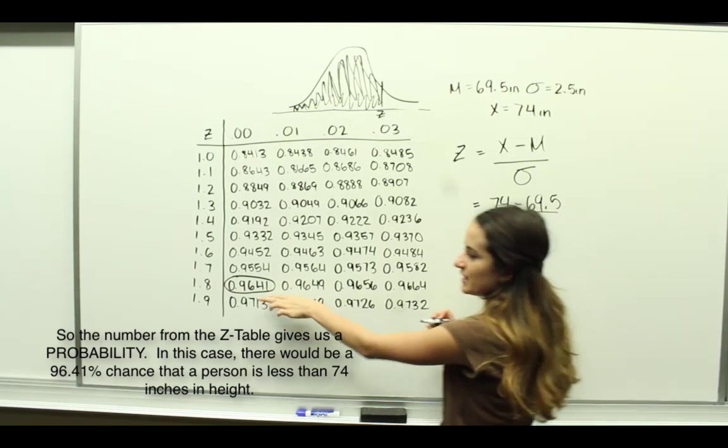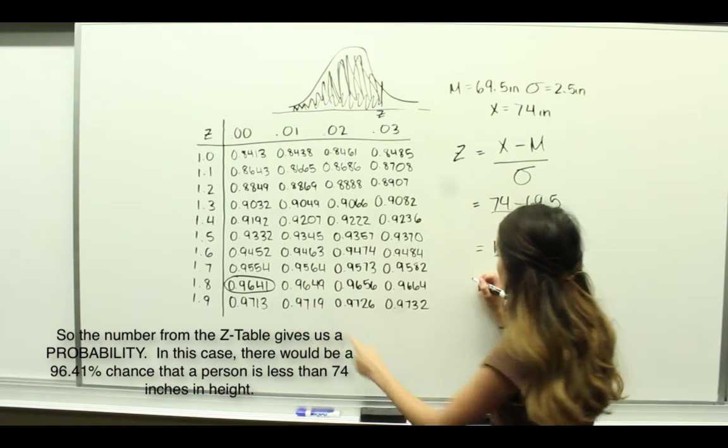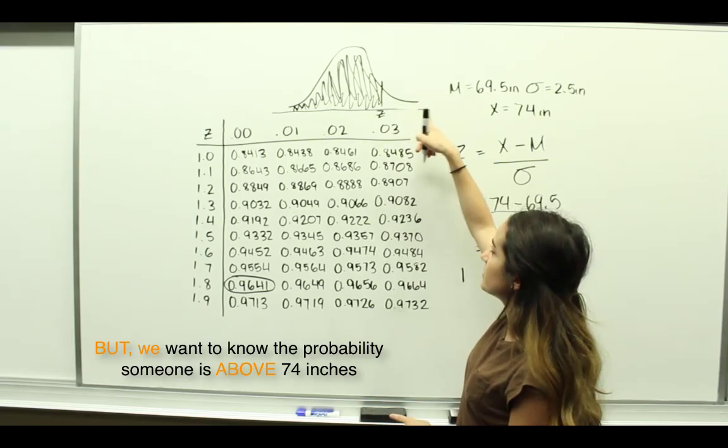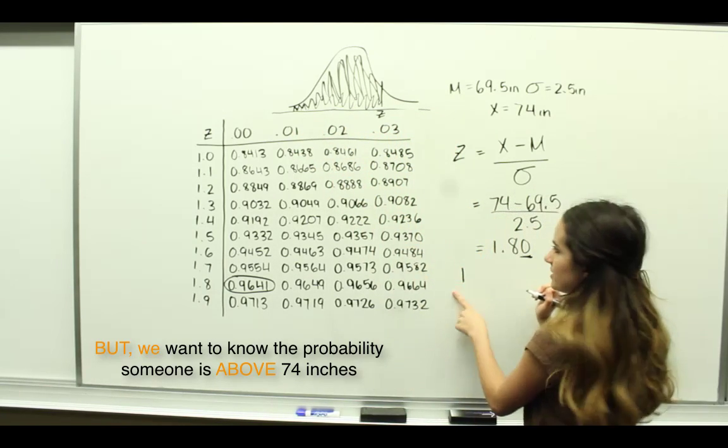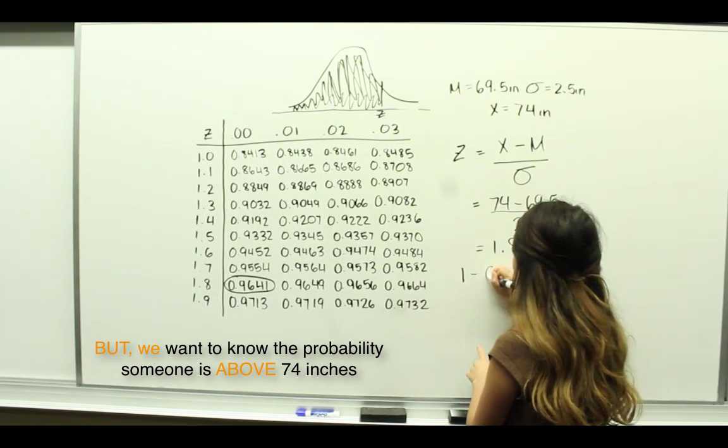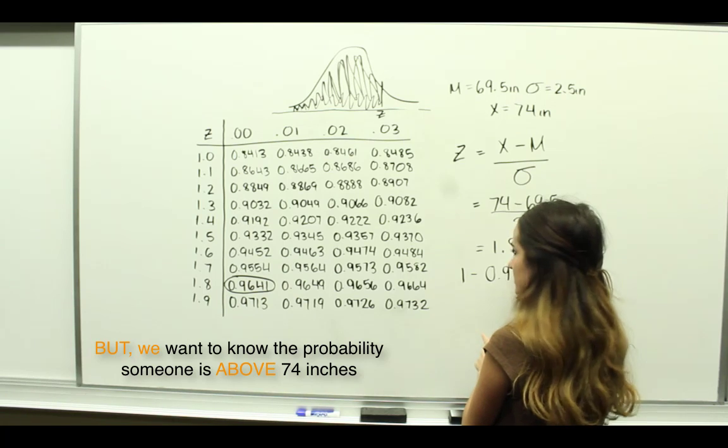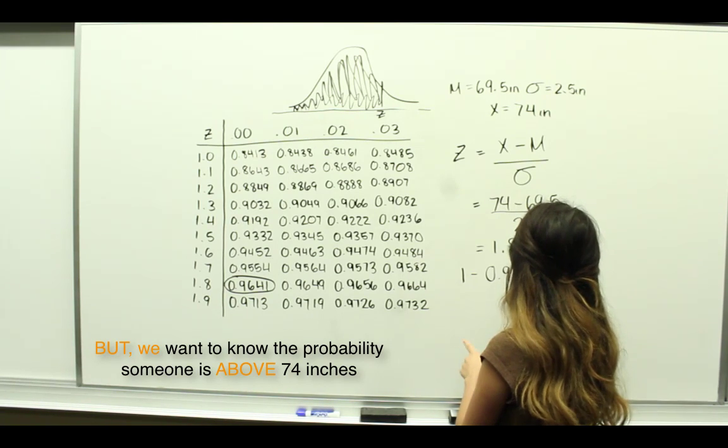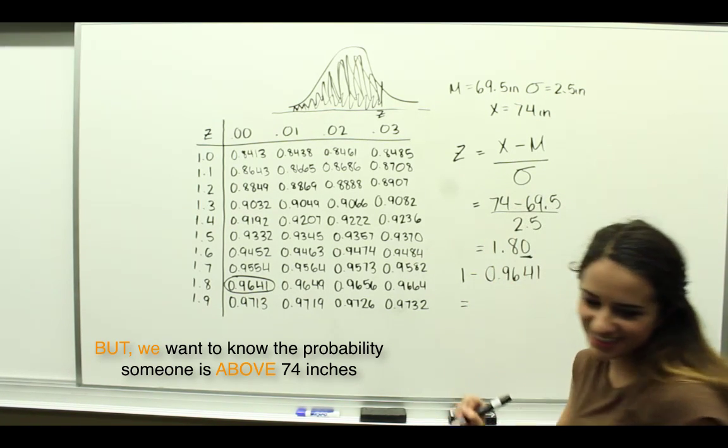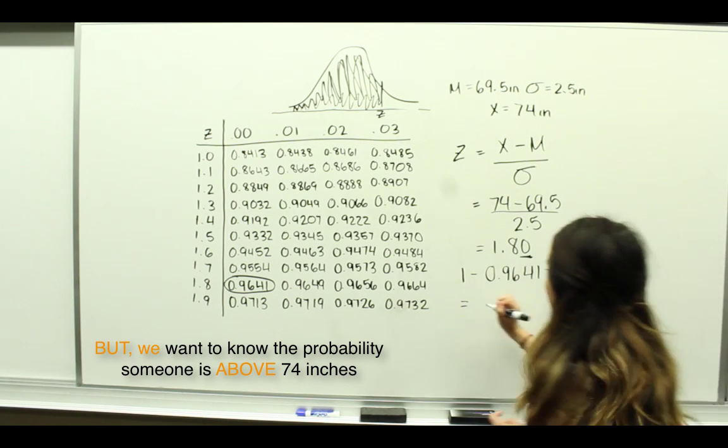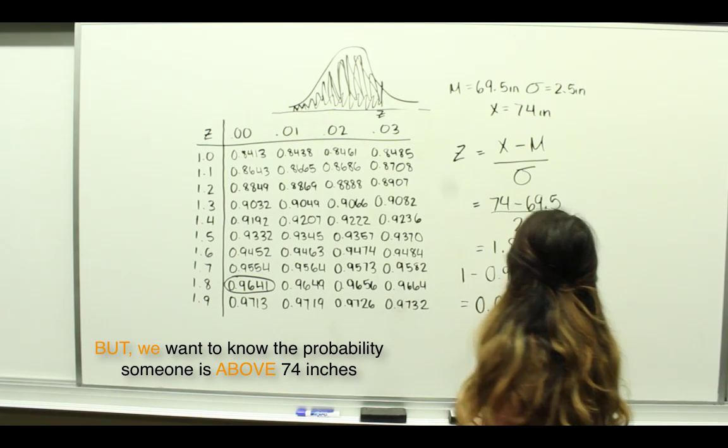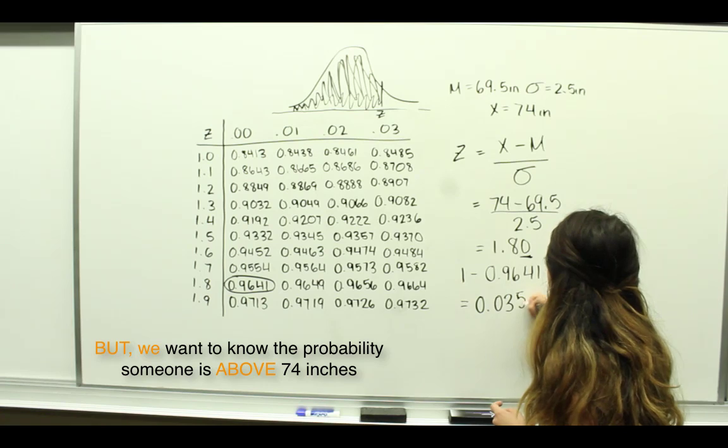We would take this value that we got off the Z-table and subtract it from 1 because the whole area of the distribution is equal to 1. So we do 1 minus 0.9641 and that gives us 0.0359.